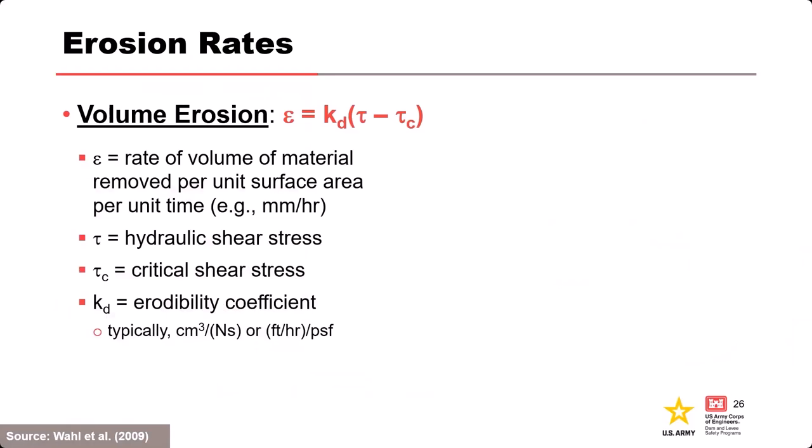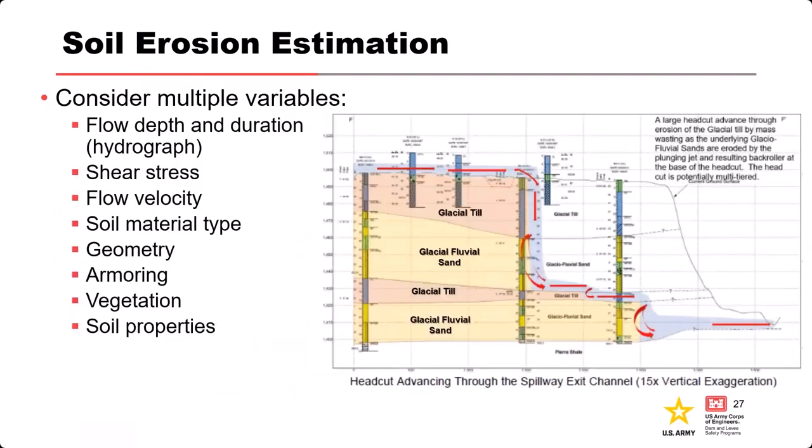For erosion rates and volume erosion: the direct calculation uses the erodibility coefficient multiplied by the difference between the hydraulic shear stress and the critical shear stress (τ − τ_c), which gives the erosion rate. That's straight volume erosion.